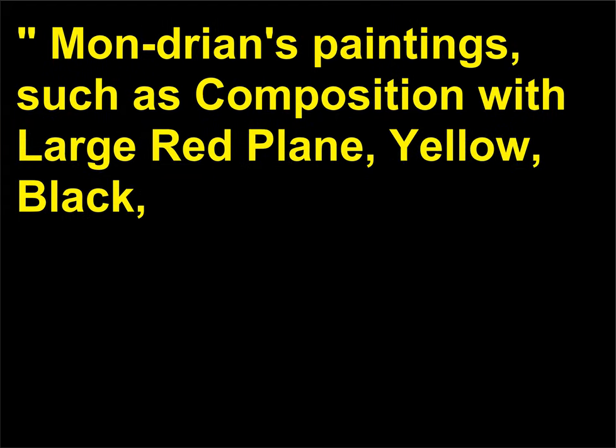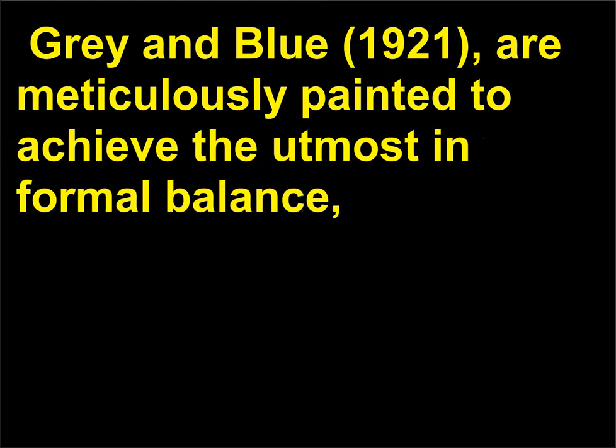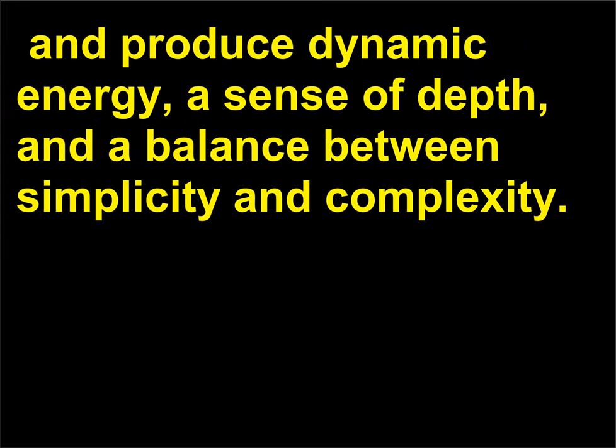Mondrian's paintings — such as Composition with Large Red Plane, Yellow, Black, Gray and Blue (1921) — are meticulously painted to achieve the utmost informal balance, and produce dynamic energy, a sense of depth, and a balance between simplicity and complexity.